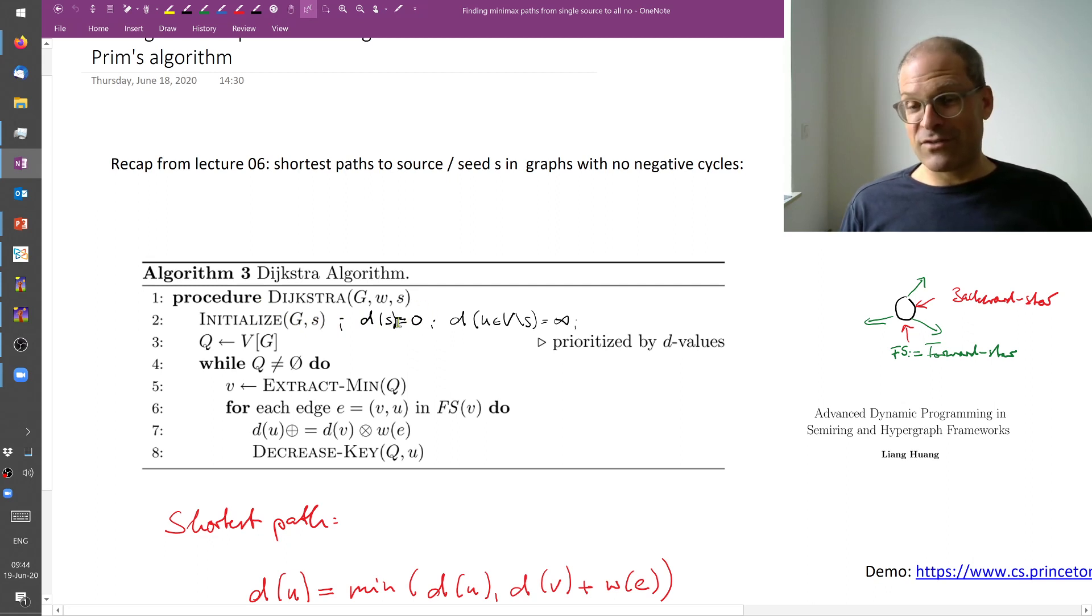The distance of s to itself is zero. The distance for every other node in my set of vertices except s we set to infinity and then we put all the nodes of the graph on a queue prioritized by these distance values, by these d values.